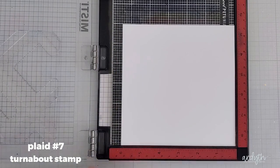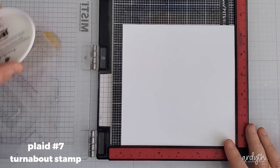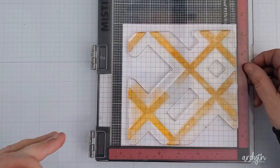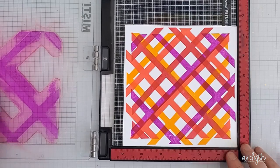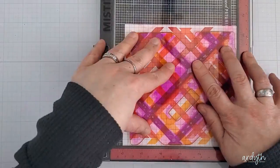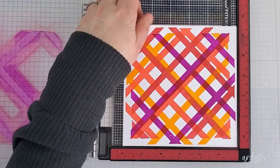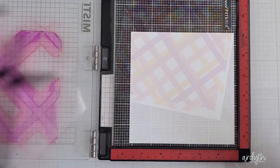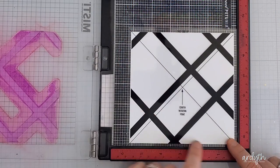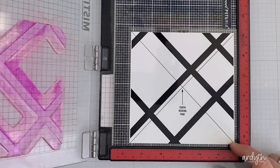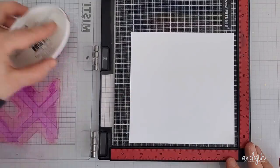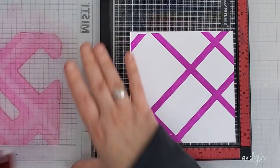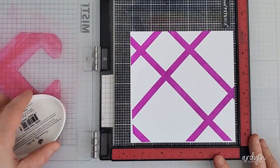Plaid number seven is a Concord & 9th turnabout stamp and a demonstration of my absent-mindedness. I couldn't find my jig that helps make sure I line up the turnabout stamps properly, and I thought no problem, I'll just use a six-inch square piece of cardstock, and I got a hot mess. Then I realized, oh wait, the stamp is about five and a half inches, so I'll do it again with a five and a half inch square piece of cardstock. It's better but still not perfect.